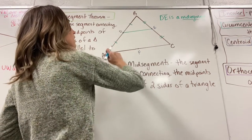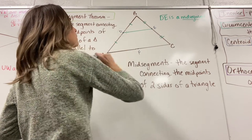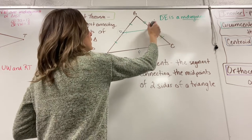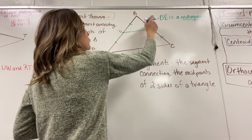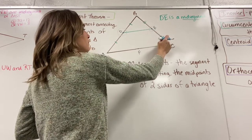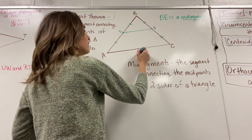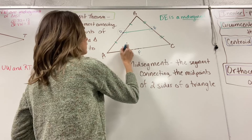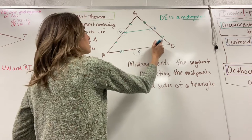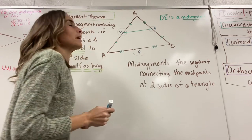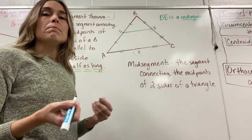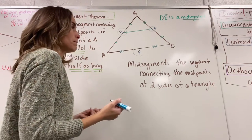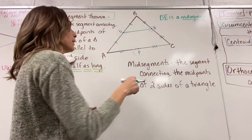Side AB — the midpoint is D. Side BC — the midpoint is E. The midpoint separates that side into equal parts. On side AC, the midpoint is F. I forgot to mark the congruency right here — there we go. So those are the midpoints.